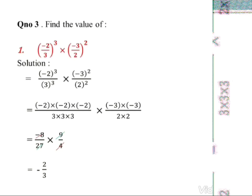Question number 3: find the value of (-2/3)² multiplied by (-3/2)². The exponent is 2. We can take the whole power separately in numerator and denominator. So (-2/3)² means (-2)² over 3², and (-3/2)² means (-3)² over 2². Numerator of first: (-2)×(-2)×(-2) three times equals -8. Denominator: 3×3×3 = 27.